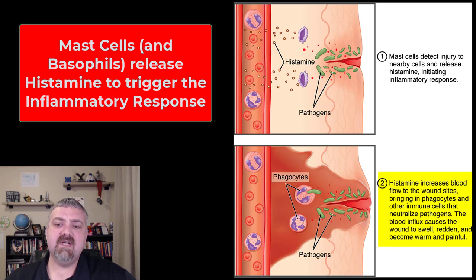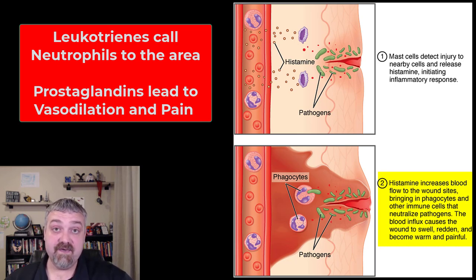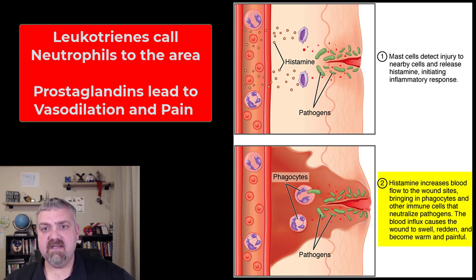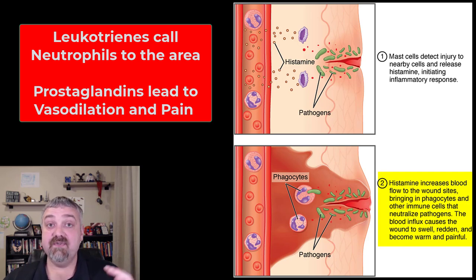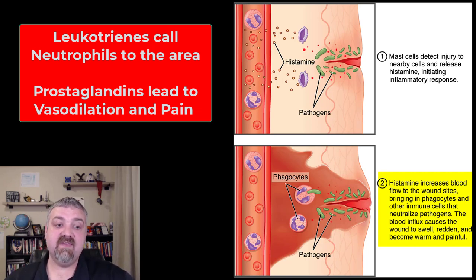Other cells and chemicals are going to be important too. The other key chemicals are the leukotrienes — they're important because they call in the neutrophils, signaling that there's bacteria that has to be dealt with. But the key one, besides histamine and heparin — which is a blood thinner — is going to be the prostaglandins. Prostaglandins cause vasodilation, relax smooth muscle, and also cause pain. This is why anti-inflammatory drugs like ibuprofen work — they block prostaglandins, which blocks some of the pain and swelling associated with the inflammatory response.